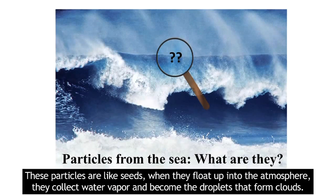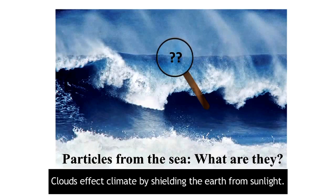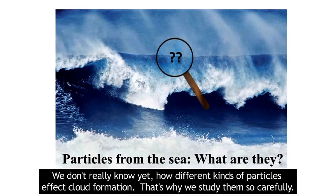These particles are like seeds. When they float up into the atmosphere, they collect water vapor and become the droplets that form clouds. Clouds affect climate by shielding the Earth from sunlight. We don't really know yet how different kinds of particles affect cloud formation. That's why we study them so carefully.